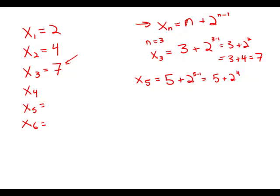That is 5 plus 2 to the 4th. Well, 2 times 2 times 2 times 2 is 16. So that means that we get 5 plus 16 is 21.